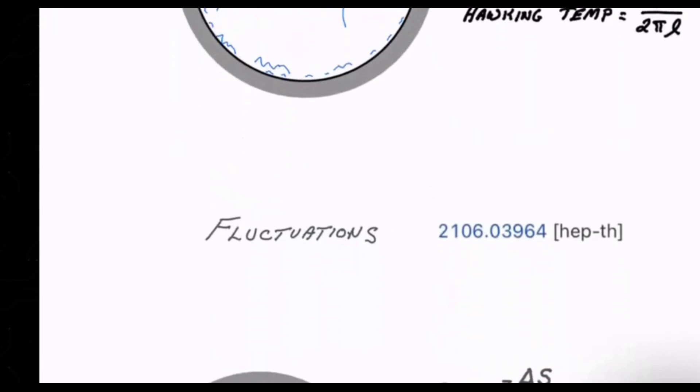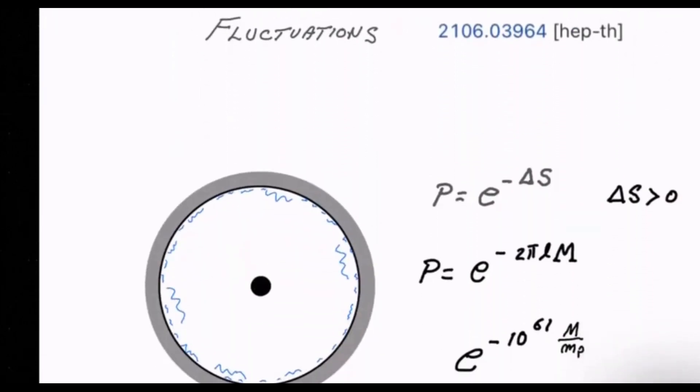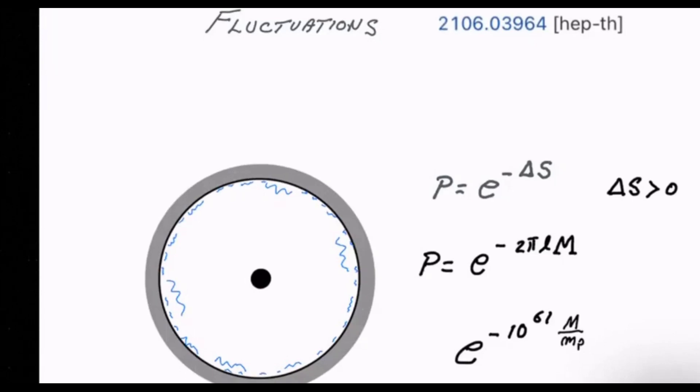Now what is the physics that the quantum mechanics of de Sitter space will be telling us about? It will be telling us about fluctuations. Thermal fluctuations to be sure, but also other kinds of what we can call out of equilibrium fluctuations. Fluctuations which are large scale. For example, a fluctuation may happen in which in the interior of the static patch a black hole nucleates.